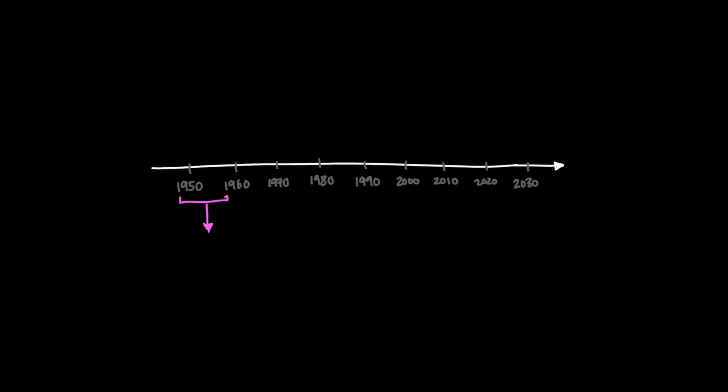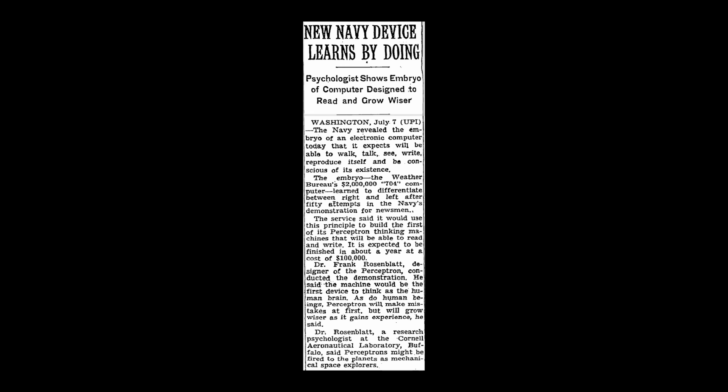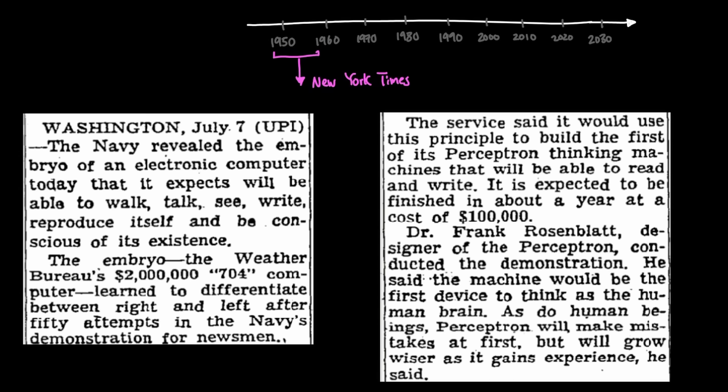Let's go back to the 1950s. AI hype back then is actually not that different from what we're seeing today. This is a New York Times article from 1958 claiming that Frank Rosenblatt will be able to build a thinking machine with enough investment. And eventually, it can walk, talk, see, write, and reproduce itself.